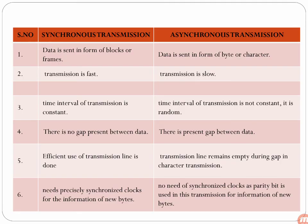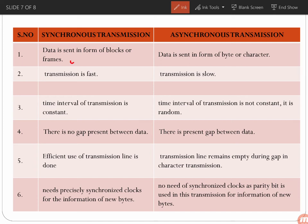The differences between synchronous and asynchronous data transfer: in synchronous transmission, data is sent in the form of blocks or frames, whereas in asynchronous, data is sent in the form of bytes or characters. Synchronous transmission is very fast because once the transmitter and receiver are aligned, data transmission continues until completion. Asynchronous transmission is comparatively slow because each data byte must be appended with a start bit and stop bit.